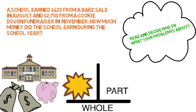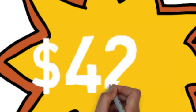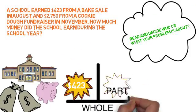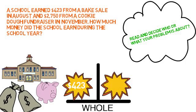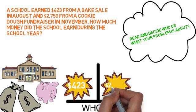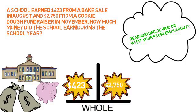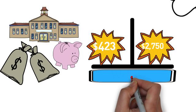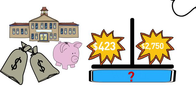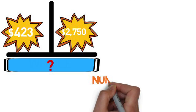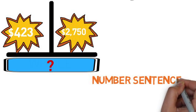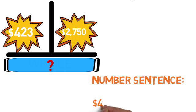Using the diagram, we can clearly see that $423 is some part of the school's money — it's not all of it. And $2,750 is also some of the school's money. Since all of your parts are known, you will need to add to get the total amount, and your picture would look like this.